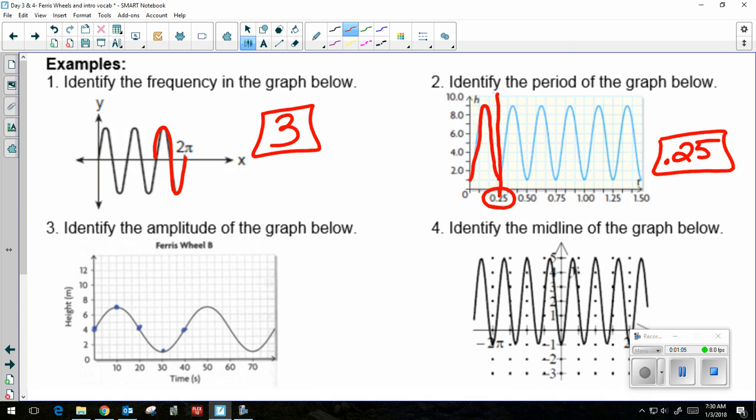Number three, identify the amplitude of the graph below. Amplitude is half the distance between the maximum and the minimum. My max is 7, my minimum is 1. Halfway between 7 and 1 is 3. If you want to use a formula, max minus min over 2. So 7 minus 1 over 2 equals 3.